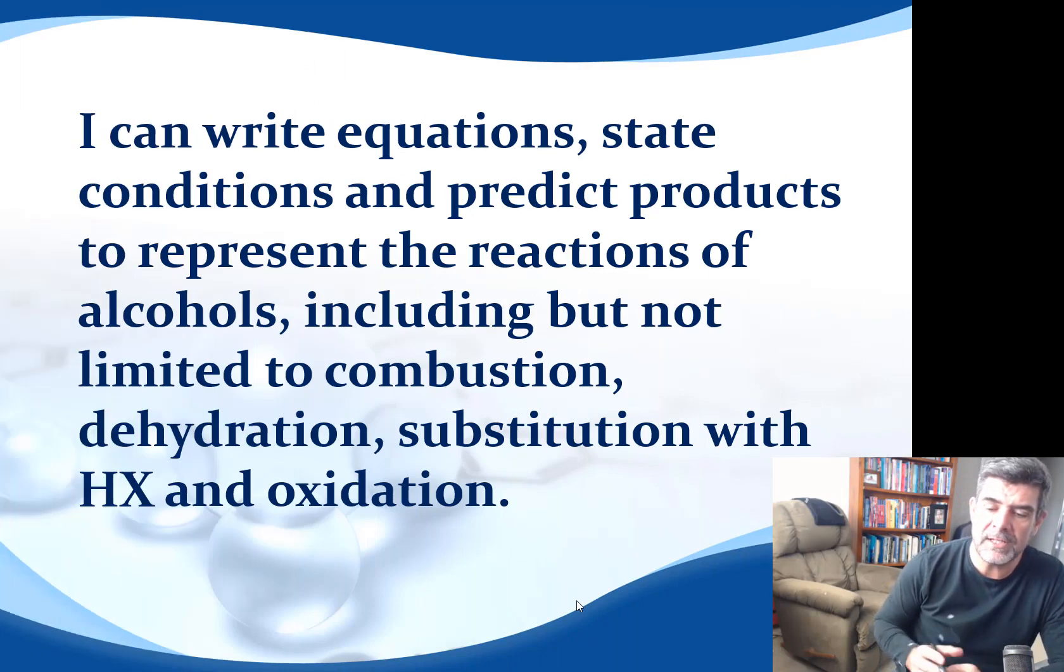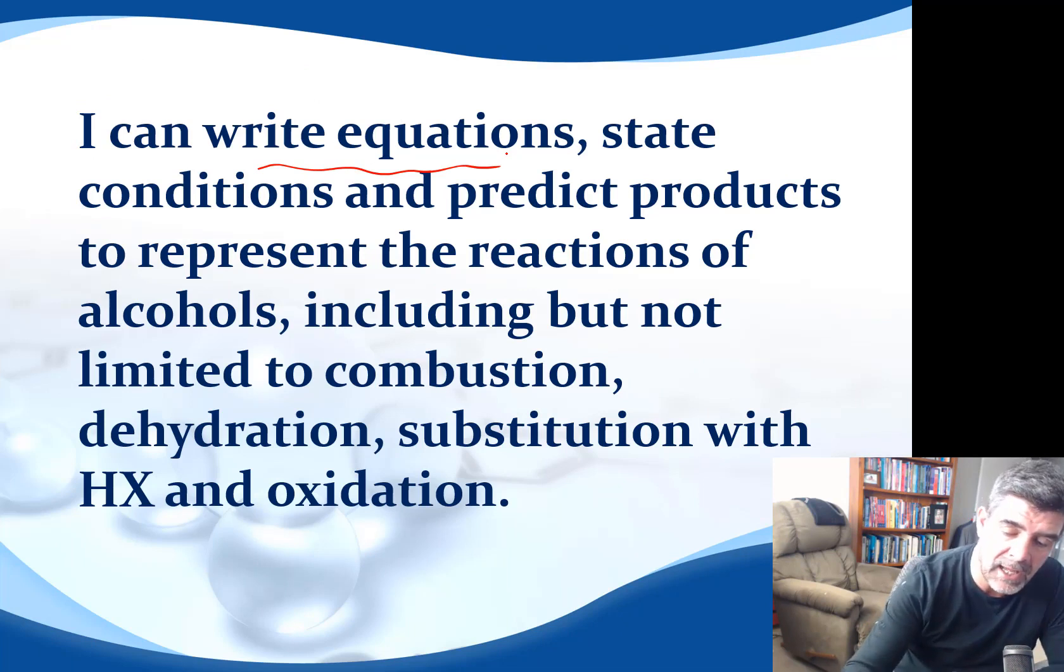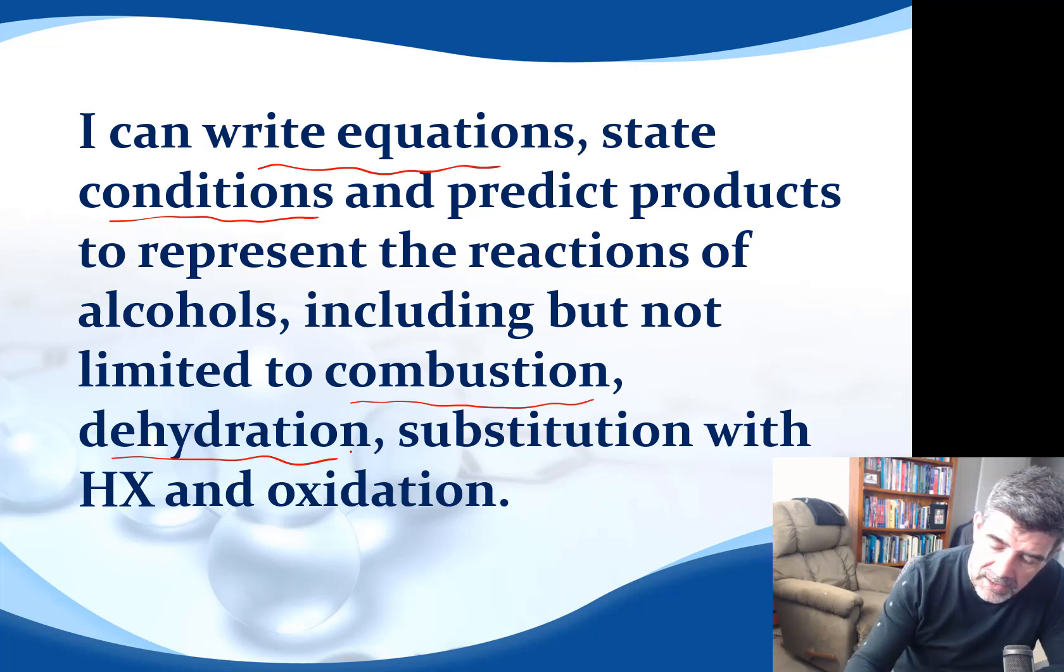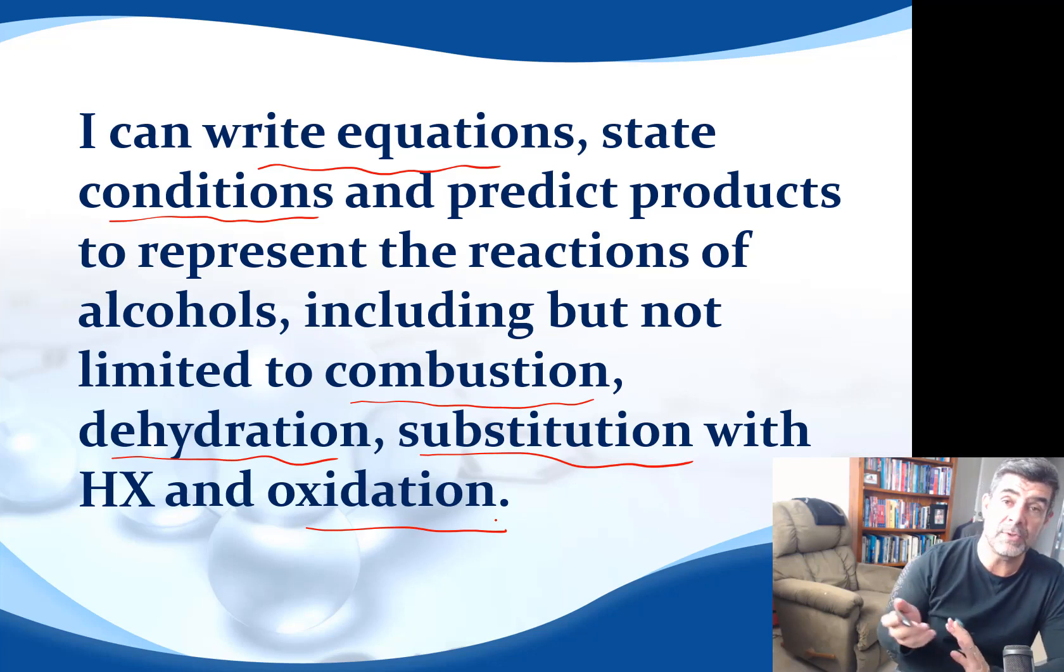What we need to be able to do in this particular one is write some equations, look at the conditions if there are any specific conditions associated with some of these reactions, predict products and represent reactions of alcohols. The ones we need to look at are combustion, dehydration, substitution, and oxidation. So we'll have a look at examples of all four of these different types of reactions.